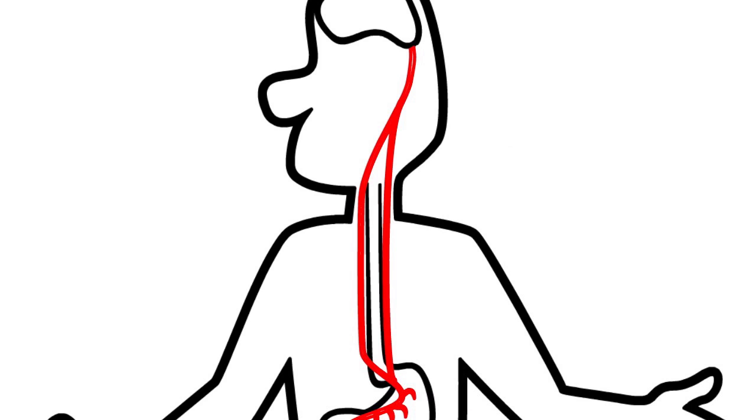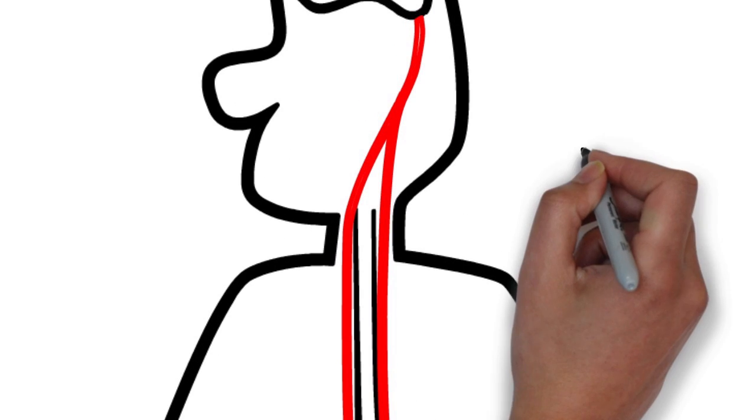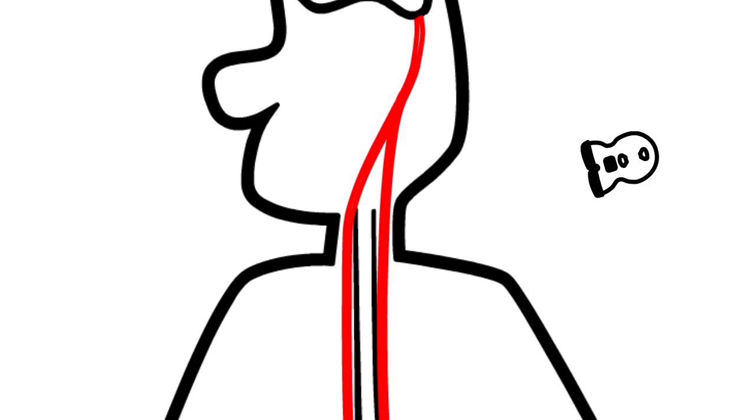Using the vagal stimulator is easy. It's positioned on the skin overlying the course of the nerve in the neck, and a gentle current can be felt as a tingling sensation.